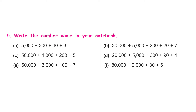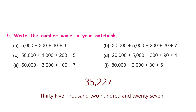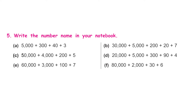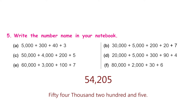For part b: 30,000 + 5,000 + 200 + 20 + 7 — put them together and it becomes thirty-five thousand two hundred and twenty-seven. For part c: 50,000 + 4,000 + 200 + 5 — put them together and it is read as fifty-four thousand two hundred and five. The rest of the questions — try to attempt yourself.